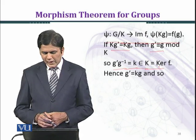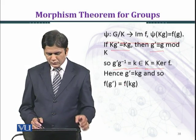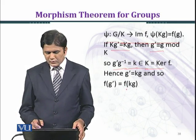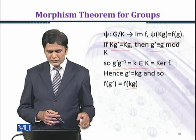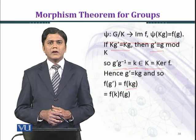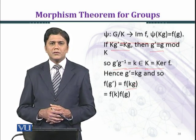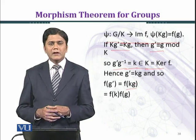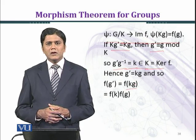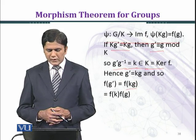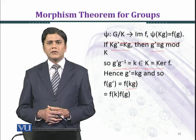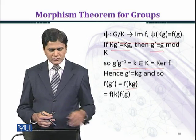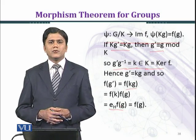Hence G prime equals KG, and so F(G prime) — taking the image of G prime under F, where G prime equals KG — gives F(KG) equal to F(K) times F(G) by the homomorphism property. We are given in the theorem that F is a homomorphism, and since K belongs to the kernel of F, every element in the kernel maps to the identity of H, which we denote E_H. So we obtain E_H times F(G).